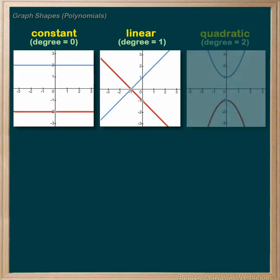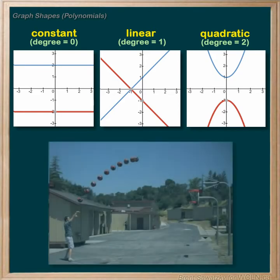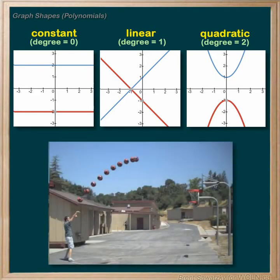Moving to a degree of two we have our quadratic relationship and it looks like a big U — positive in blue and the negative reflection in red. Quadratic graphs are sometimes called parabolas, and you see a parabola every time you toss a ball into the air, noting the ball's path while it's in the air.